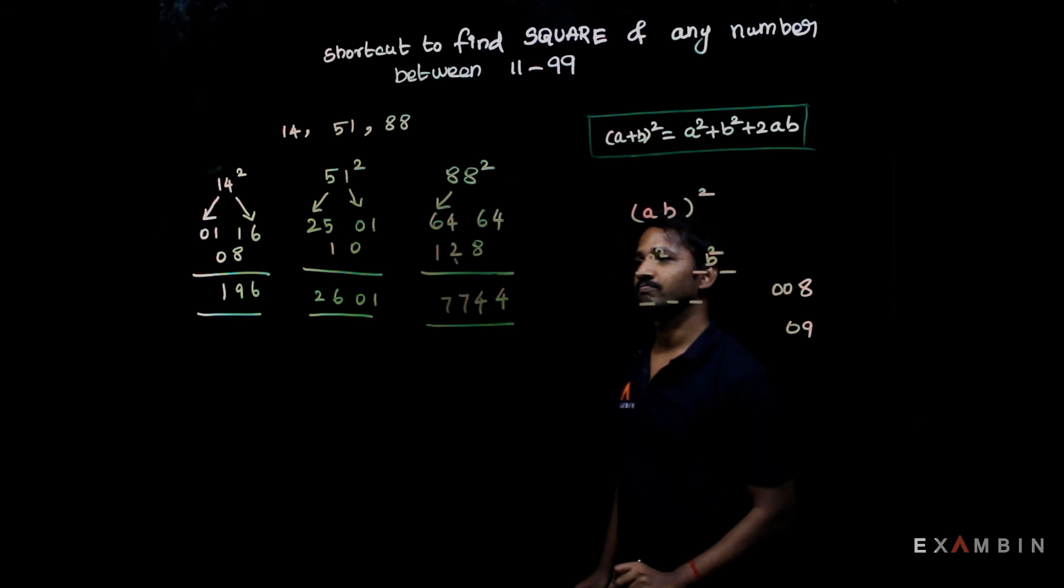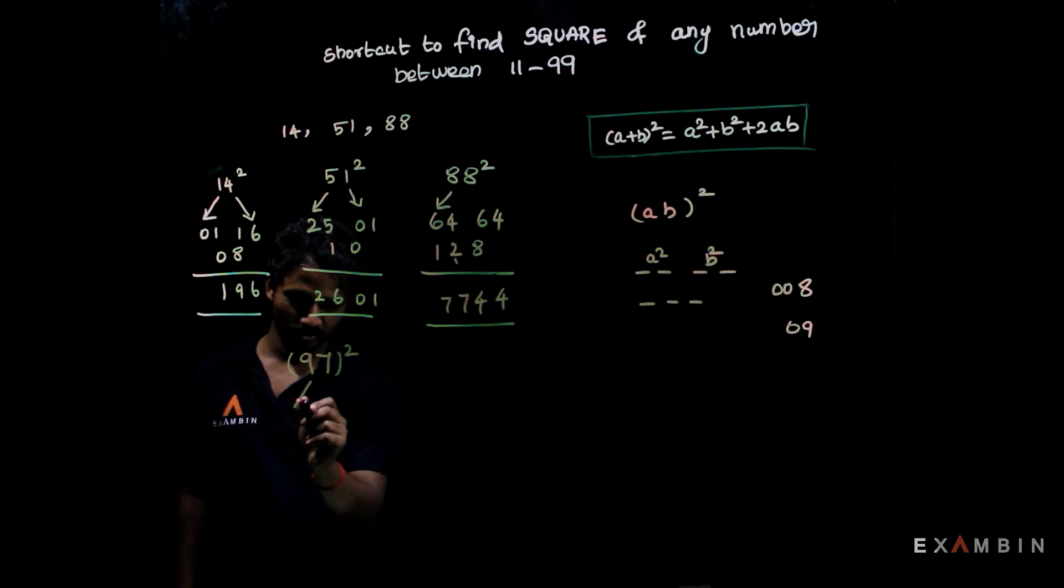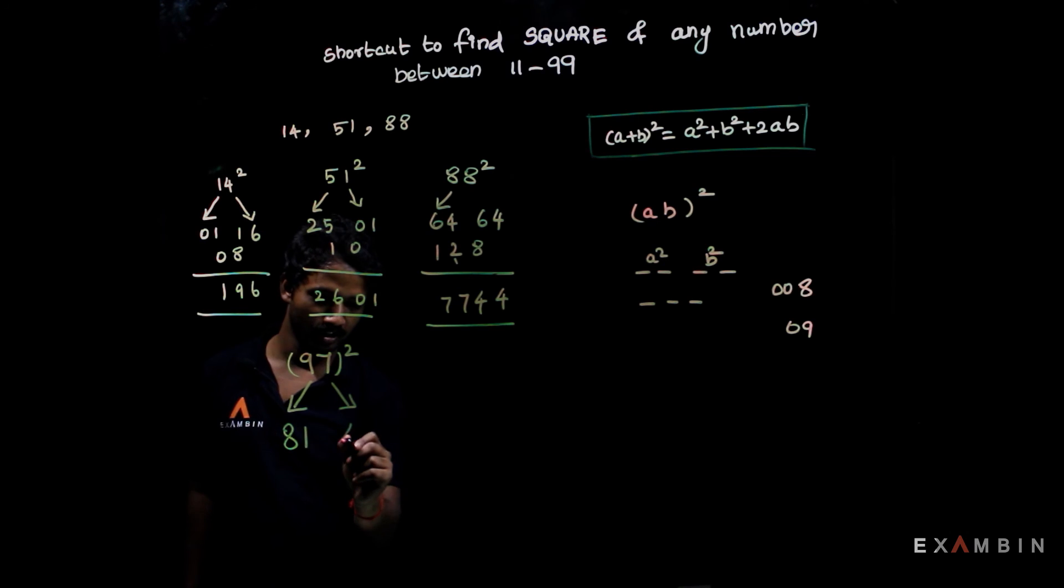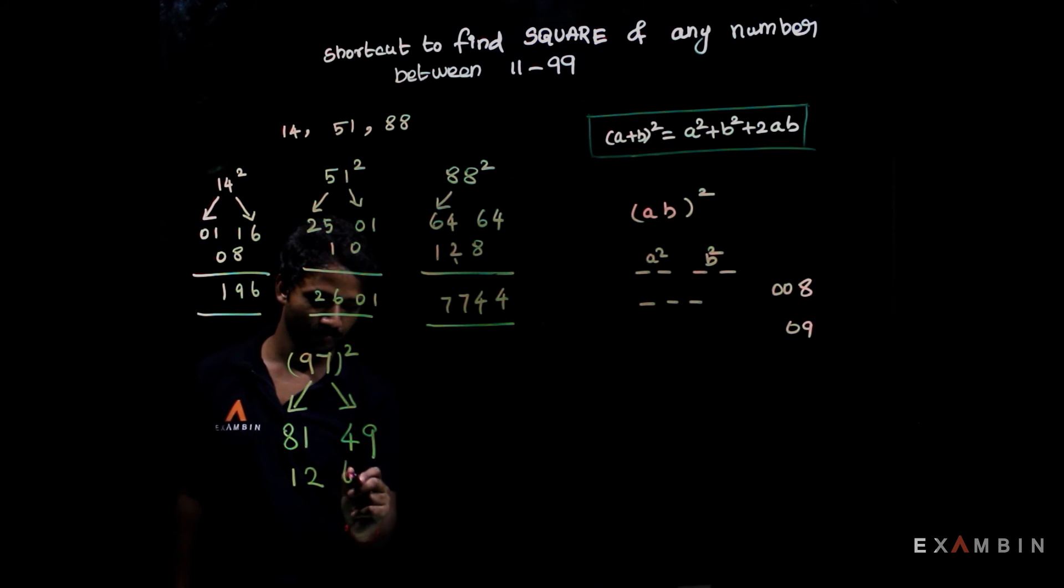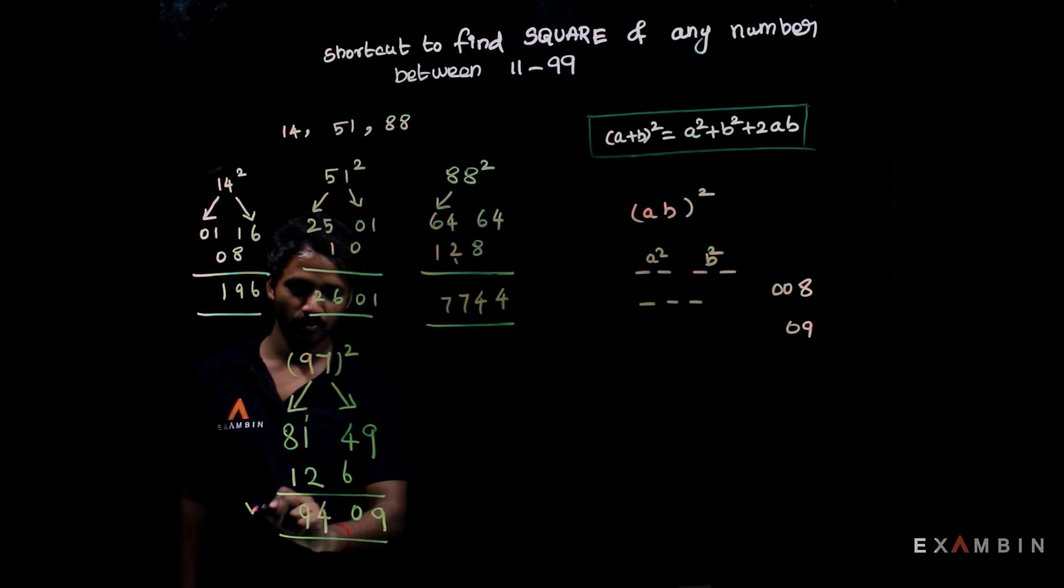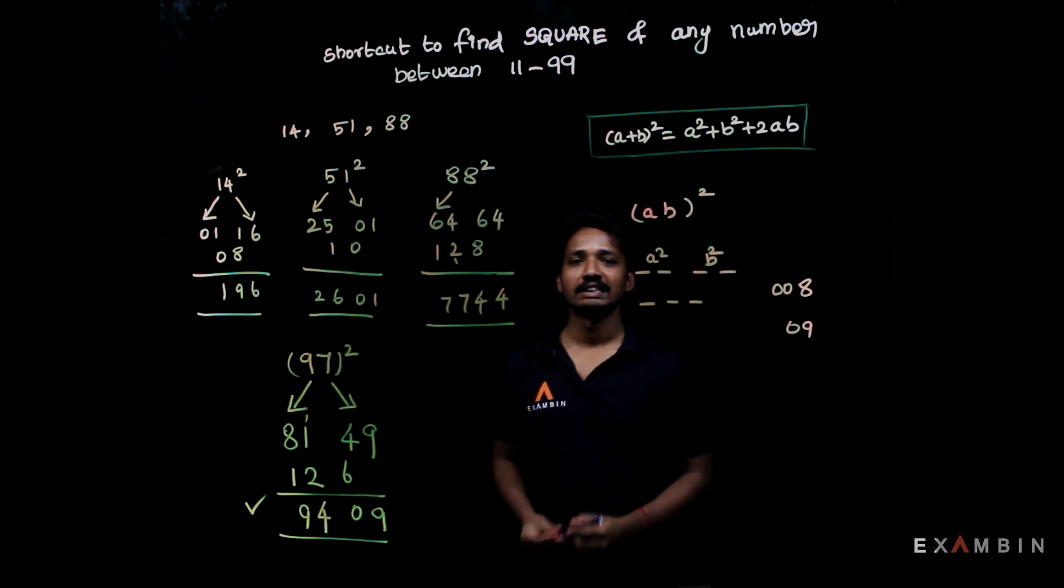We'll see one more example to understand it better. 97²: 9² = 81, 7² = 49, 2 × 9 × 7 equals 63, 63 × 2 = 126. So the answer would be 9, 0 carry 1, 1 plus 2 equals 3, 3 plus 1 equals 4, 8 plus 1 equals 9. The answer is 9409. You can calculate square of any number between 11 to 99 in just 3 seconds.